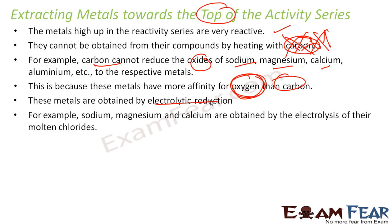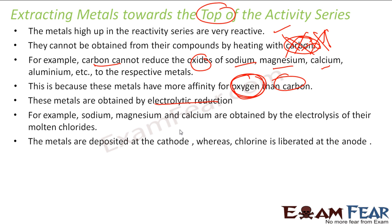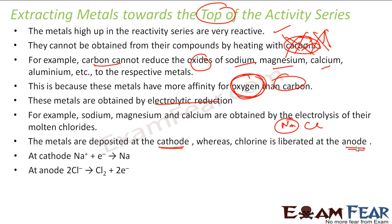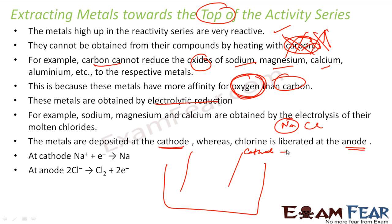In electrolytic reduction, for example, sodium, magnesium, and calcium can be obtained by electrolytic reduction of their molten chlorides. For example, you have molten sodium chloride. We use electrolytic reduction: the metals will be deposited at the cathode and chlorine will be deposited at the anode. At the cathode, there are many free electrons because the cathode has negative charge. The NaCl in solution exists as Na⁺ and Cl⁻.